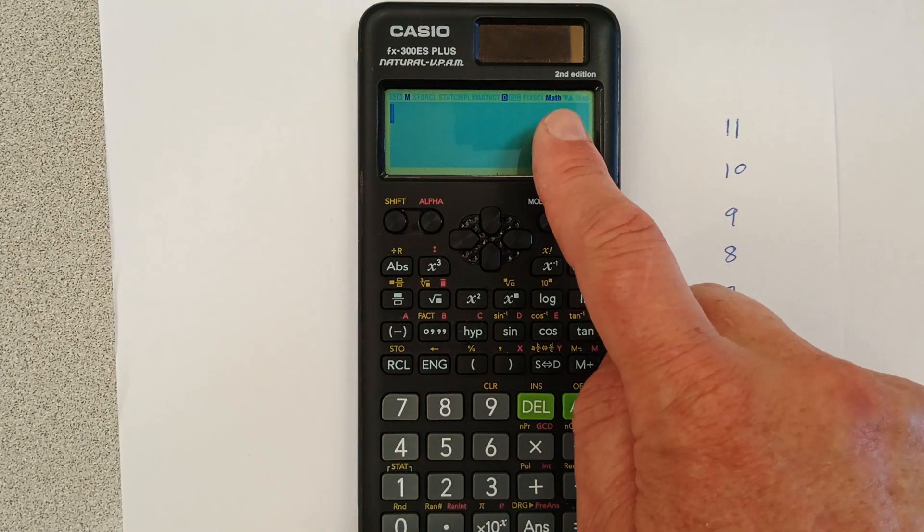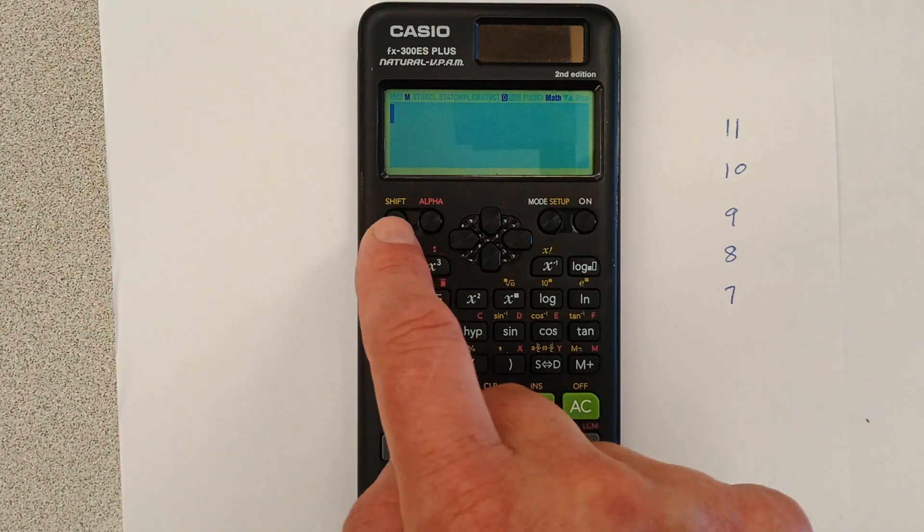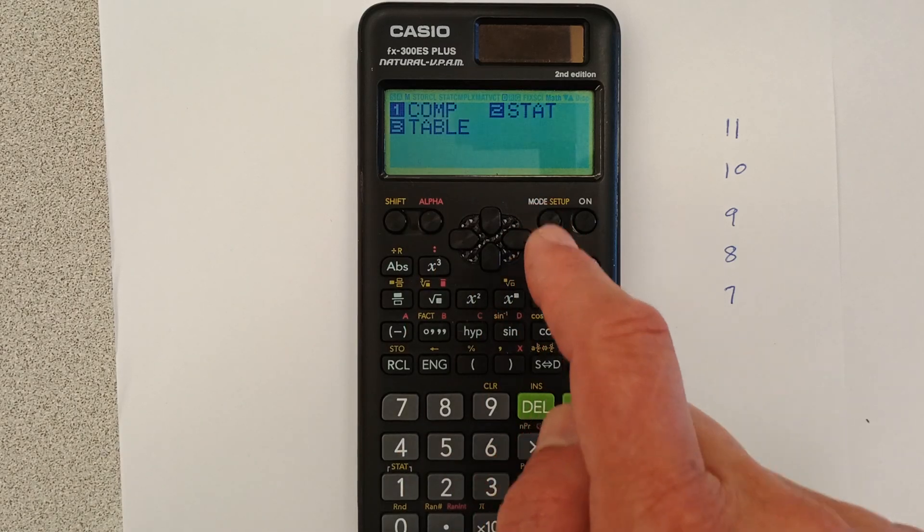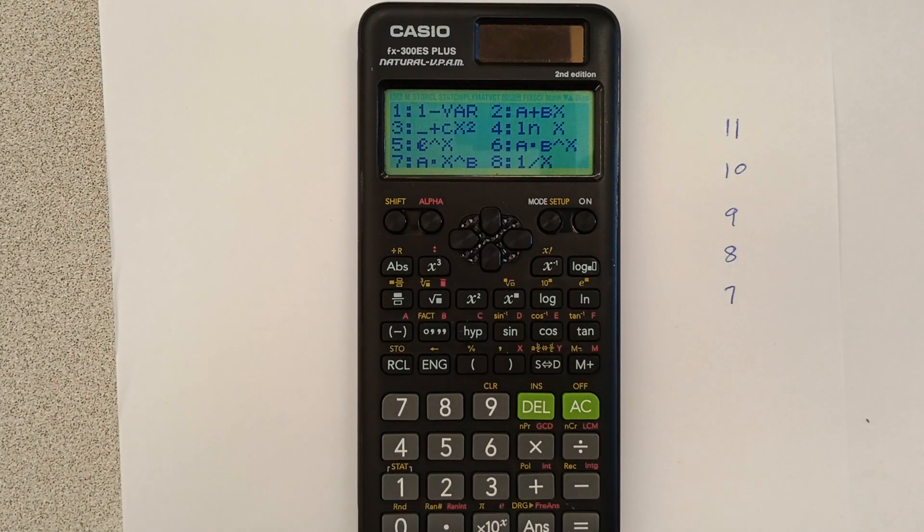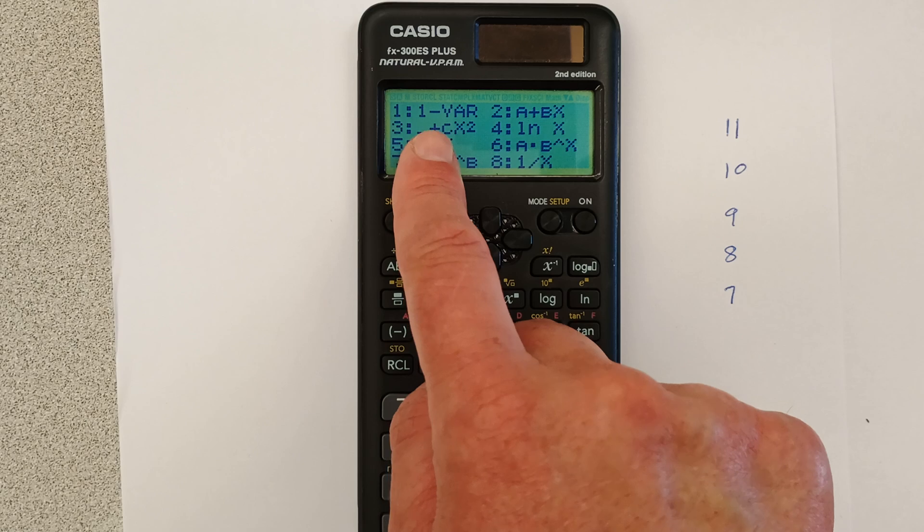Notice up here in the corner you got math. Let's change that. So we go to mode, click two for stat. We want one vary.